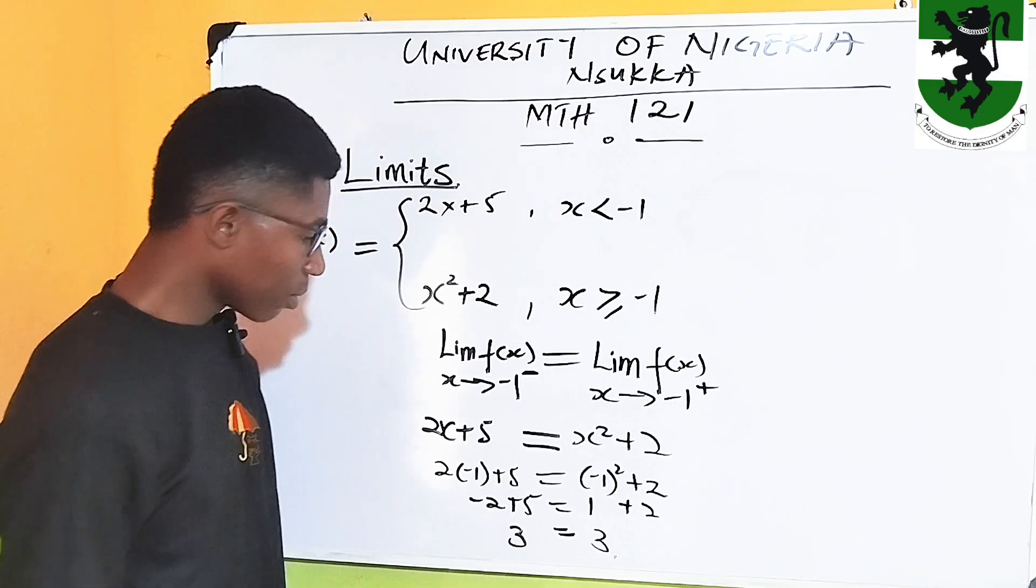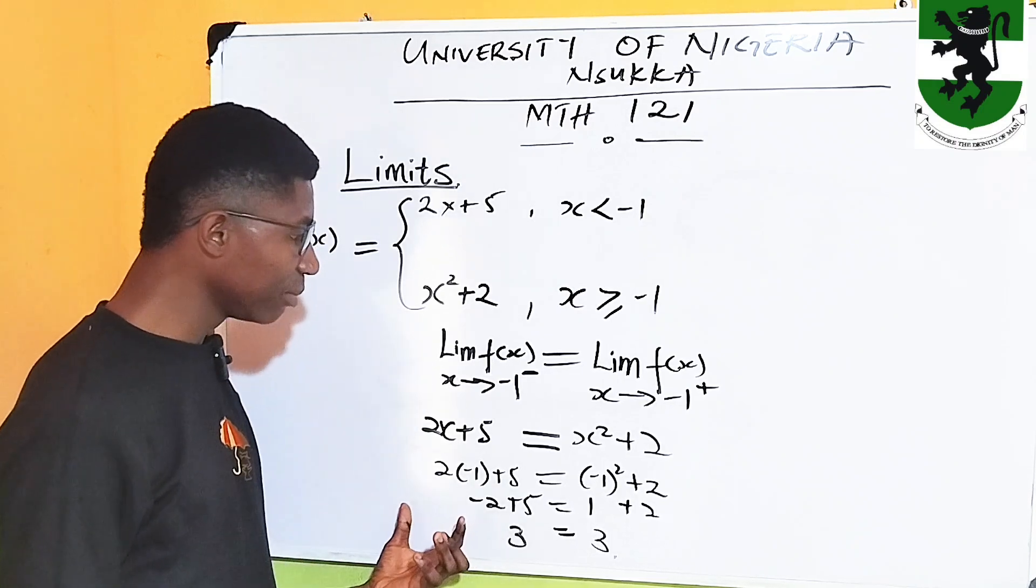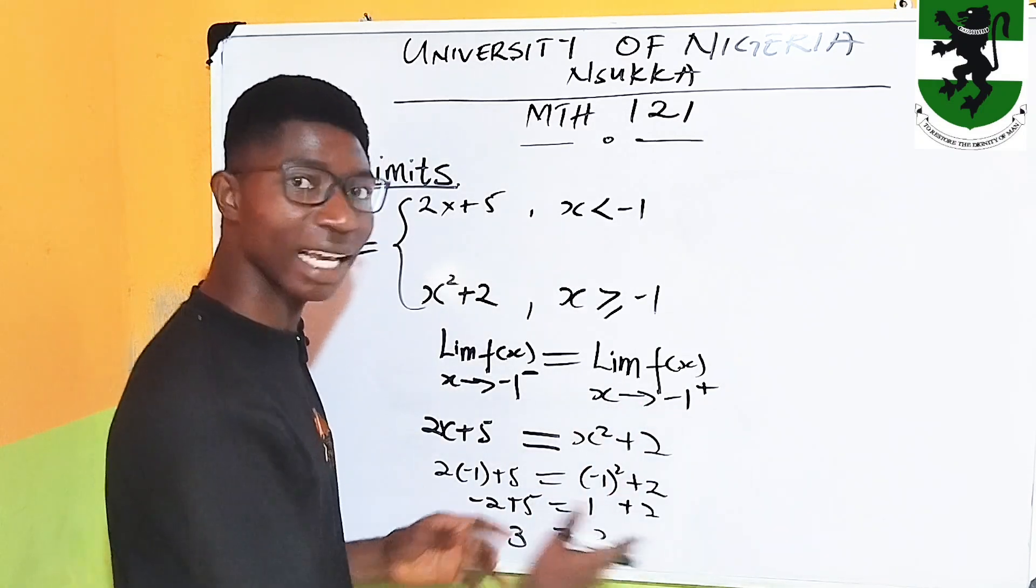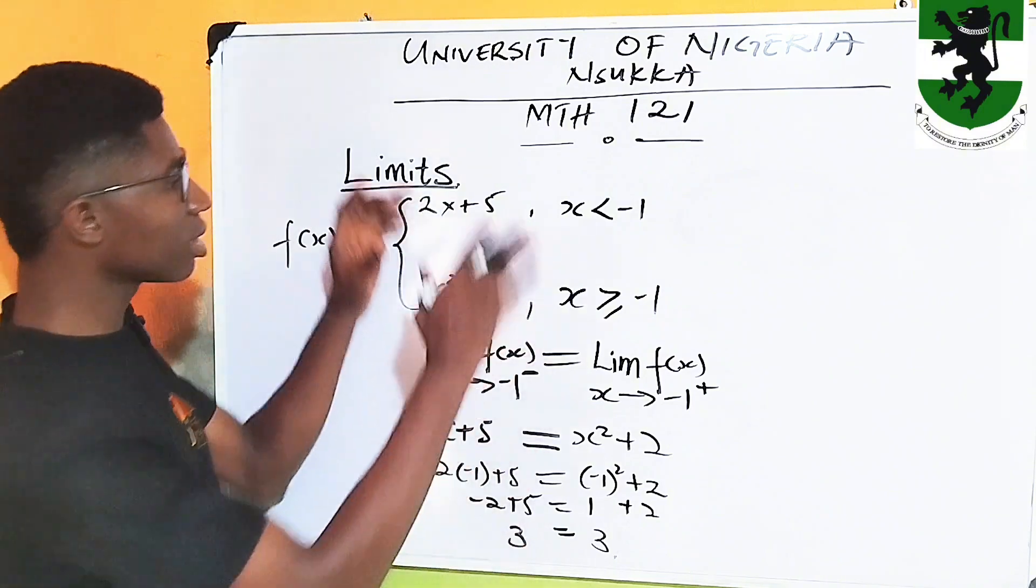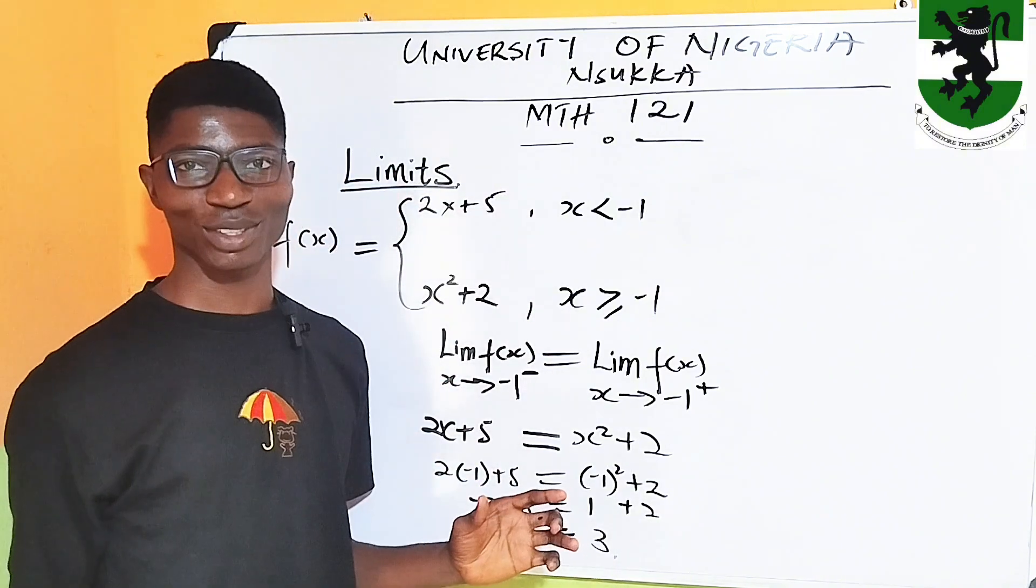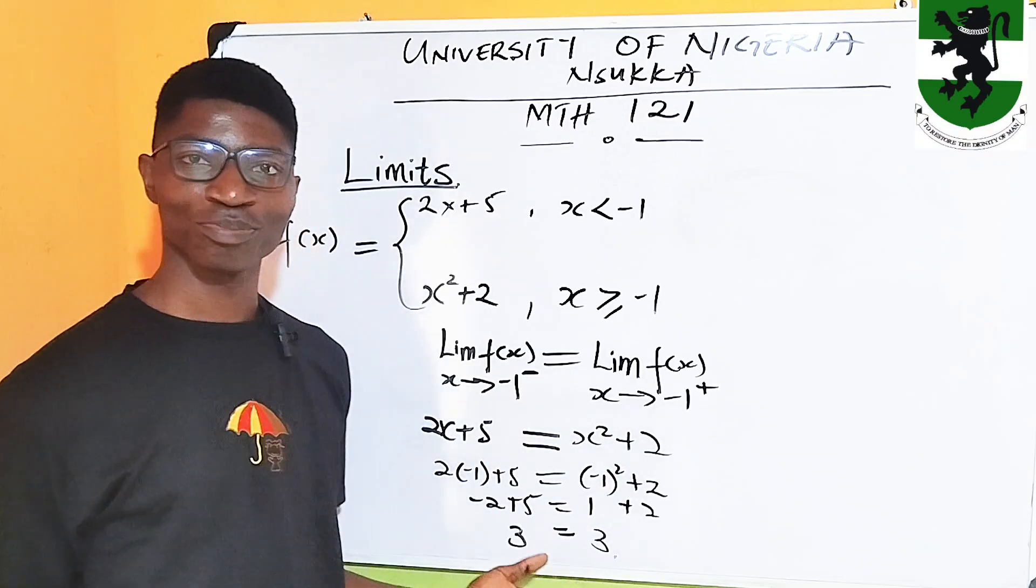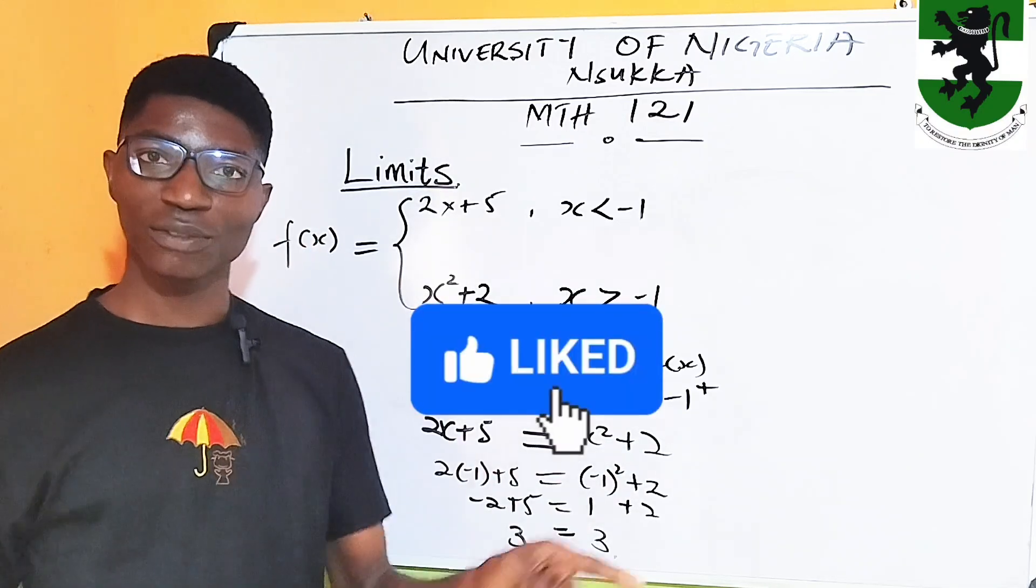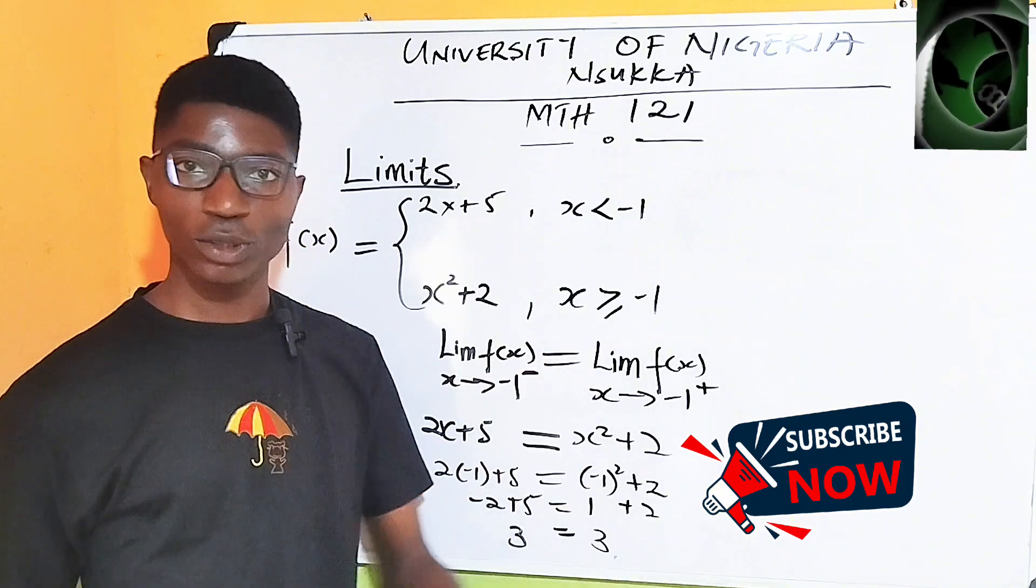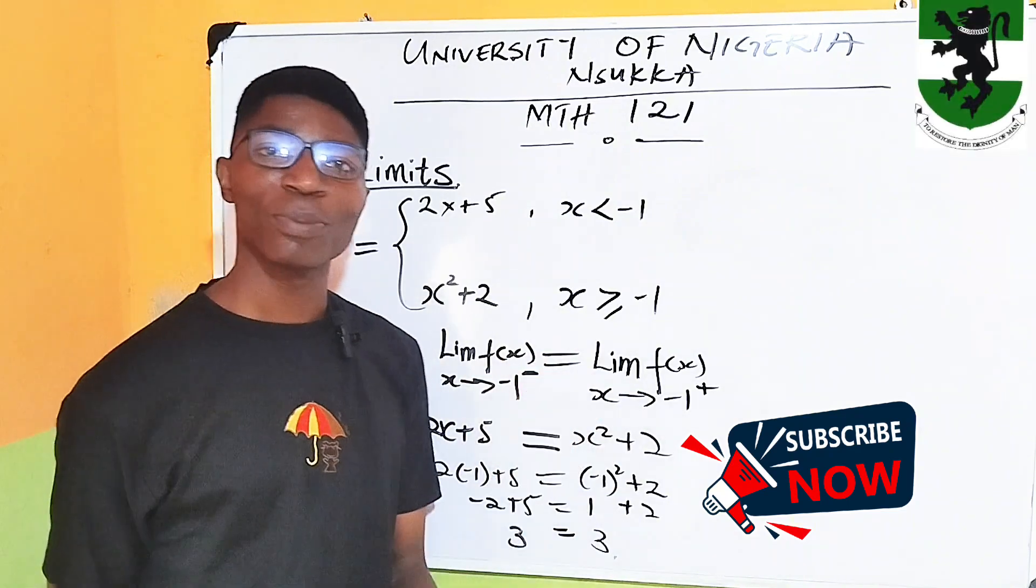We have observed that the left-hand limit is equal to the right-hand limit and they exist. Hence, this function is continuous because the left-hand limit and the right-hand limit are all equal. So, please do well to like this video, share it, repost it. If you want more, type I want more. See you.